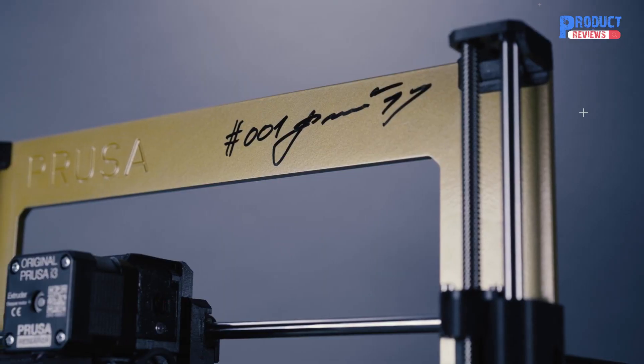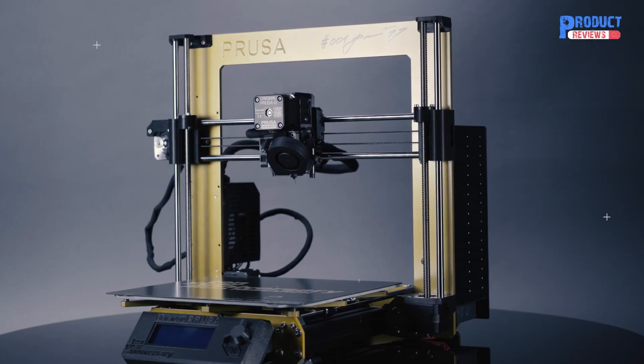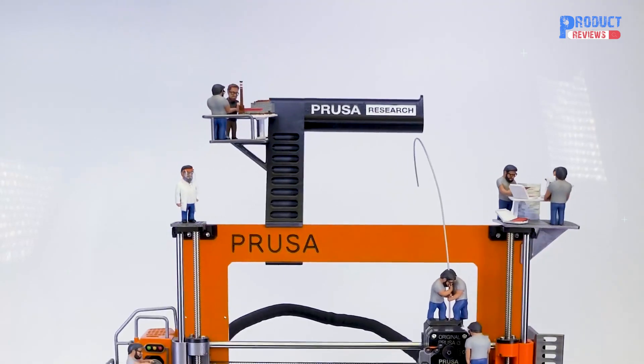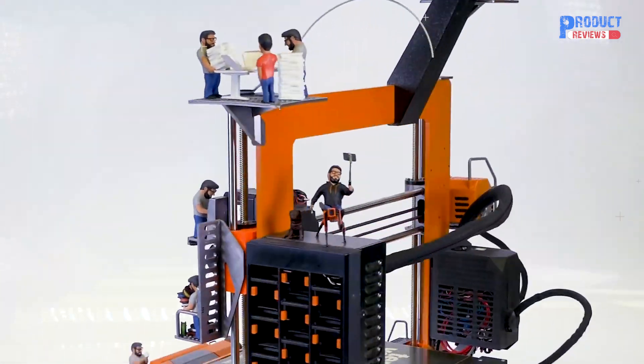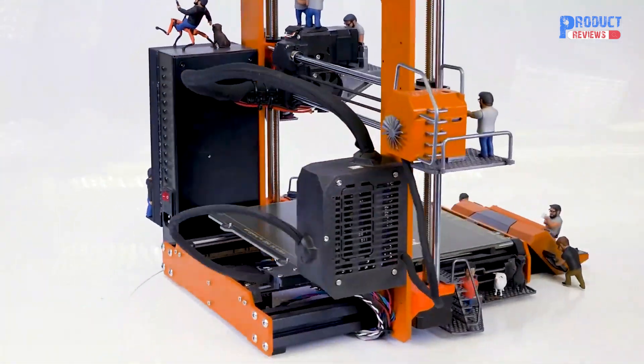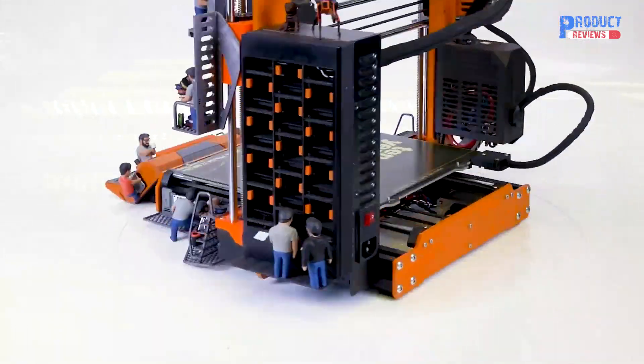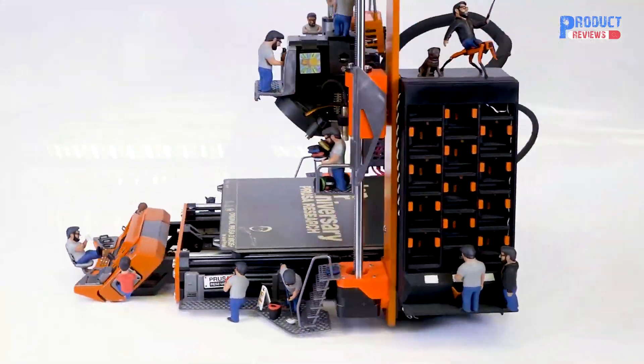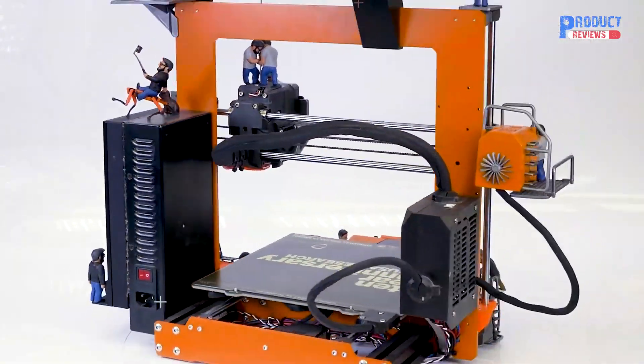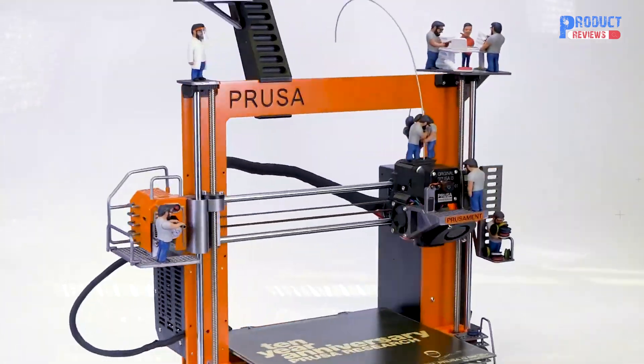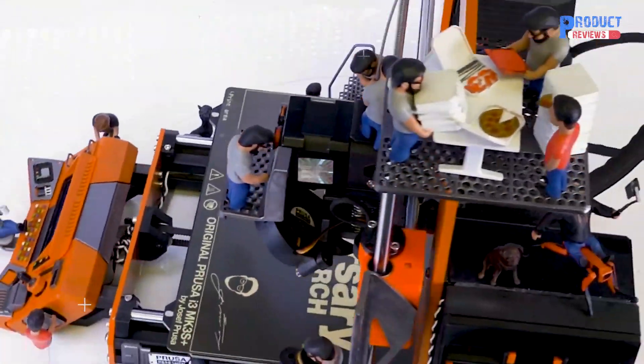As the flagship of Prusa Research's 3D printer line, the original Prusa i3 MK3S Plus is the latest iteration of a machine that has undergone a decade of advances and tweaks. The result is a polished open-frame 3D printer devoid of obvious flaws, supported by an extensive network of community and help features.